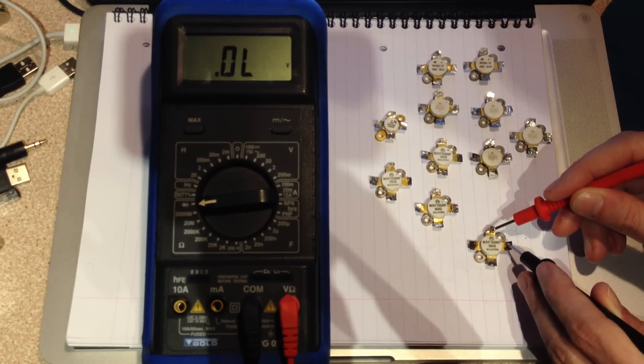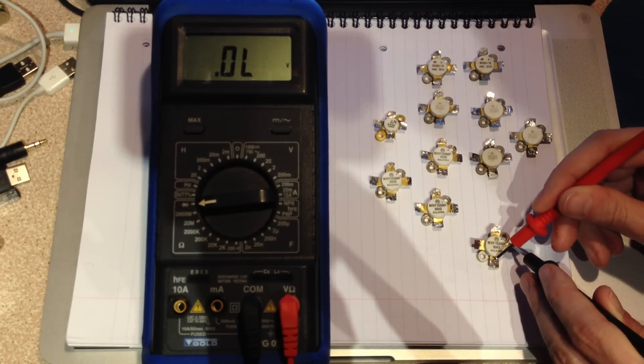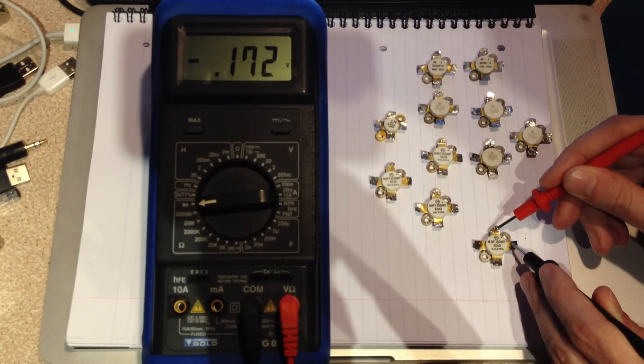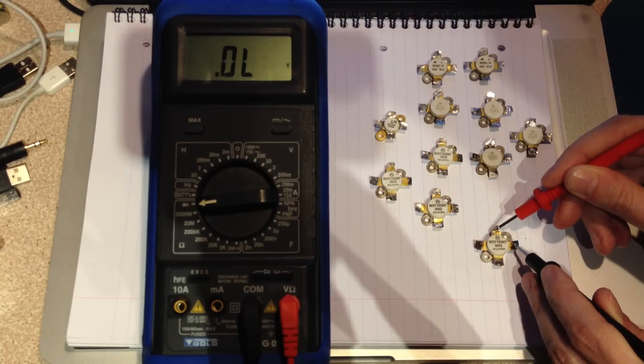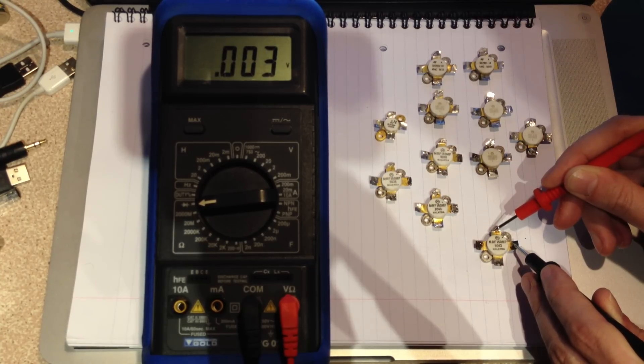Now, if we leave the black onto the source, touch the red onto the gate, and then come back to the drain, we've got a very low value there. So the MOSFET's now on.